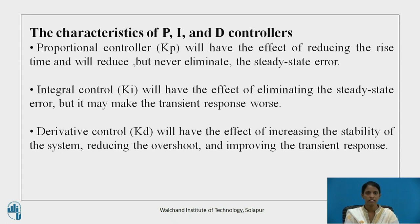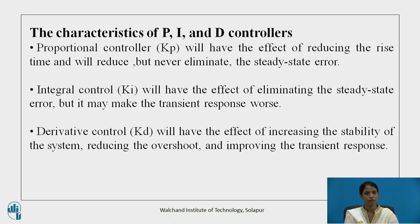The characteristics of P, I, and D controllers are as follows. The proportional controller will have the effect of reducing the rise time and will reduce but never eliminate the steady state error. The integral controller will have the effect of eliminating the steady state error, but it may make the transient response worse. The derivative controller will have the effect of increasing the stability of the system, reducing the overshoot, and improving the transient response.